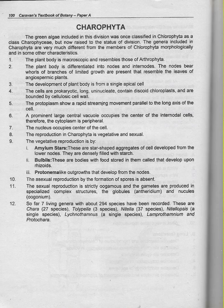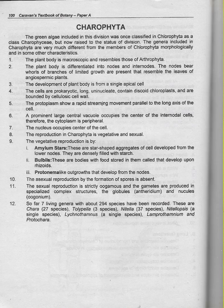Number 10: Sexual reproduction by formation of spores is absent. Number 11: Sexual reproduction is strictly oogamous and gametes are produced in specialized complex structures called globules, antheridia, and nucule (oogonium). Number 12: So far, seven living genera with about 294 species have been recorded.